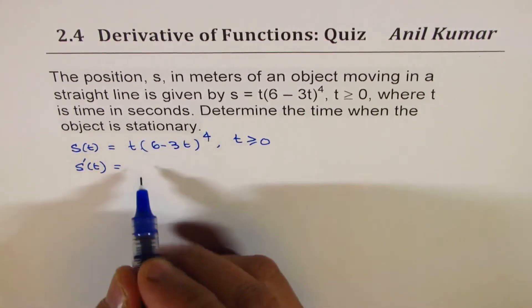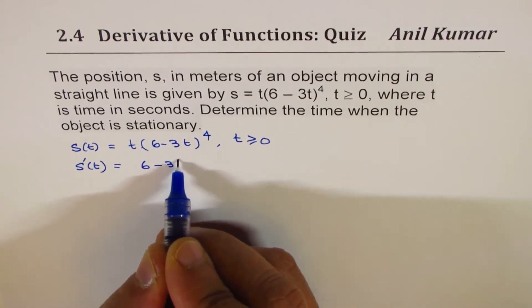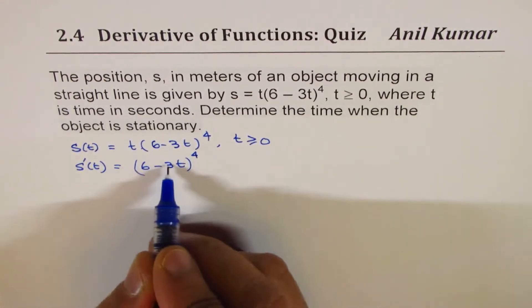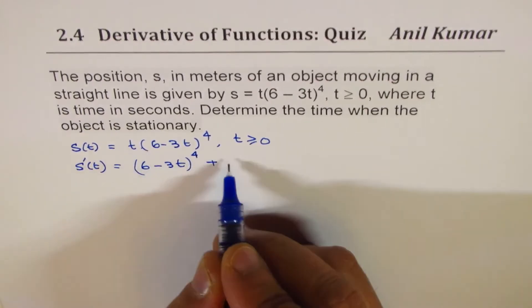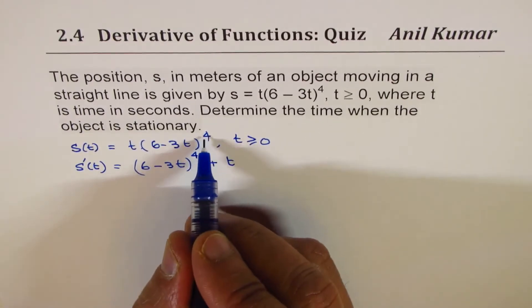Derivative of t is 1, so we get 6 minus 3t to the power of 4, 1 times this plus t times derivative of this function.